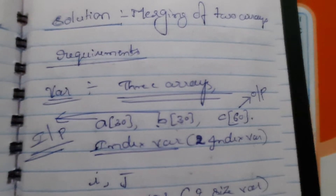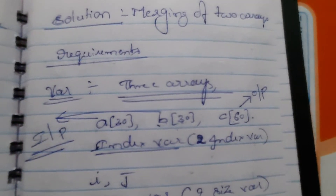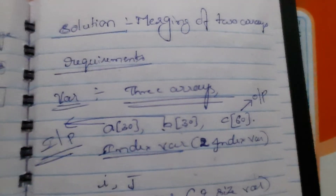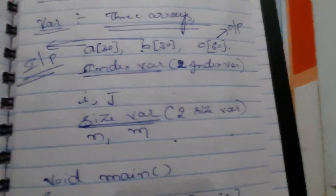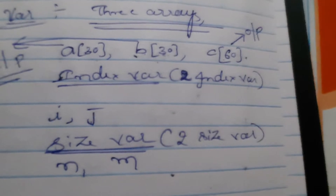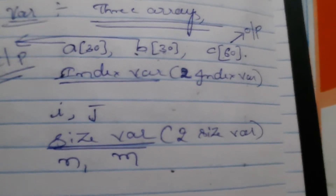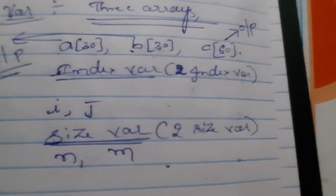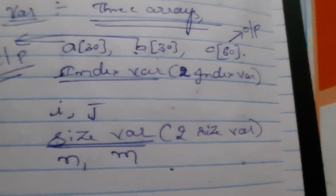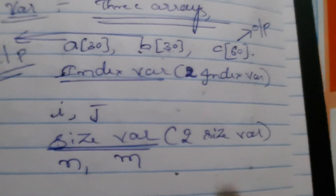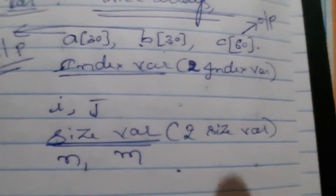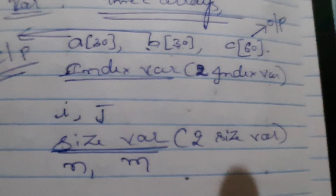Among these three arrays, array A and array B are to be filled by asking the user. That is why A and B arrays are inputs for this program, and C array is the output. As there are many arrays here, how many index variables do we require? Two index variables. Remember, just because we have three array variables does not mean we need three index variables — the same index variable can be used for all arrays. But we will see why two index variables are needed when we do the program.